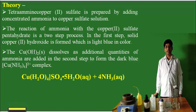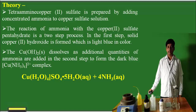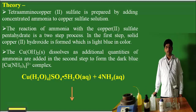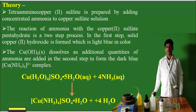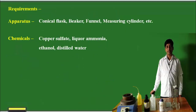Now, the reaction. You can observe here: there is copper sulphate in the hydrated form — penta-hydrated. When we add concentrated ammonia, the reaction proceeds and we will get the product, that is tetramine copper sulphate. This is the reaction.